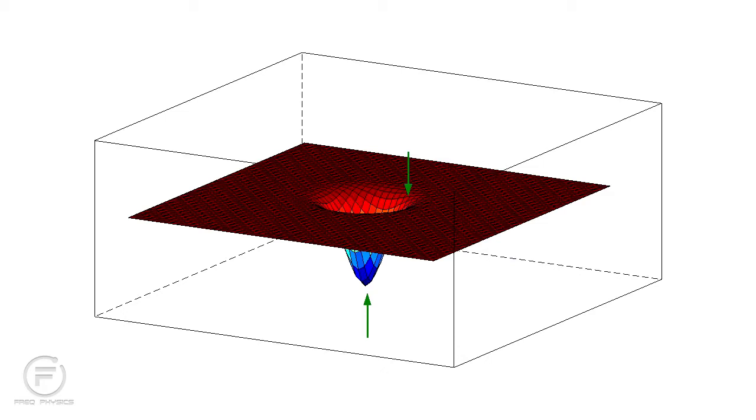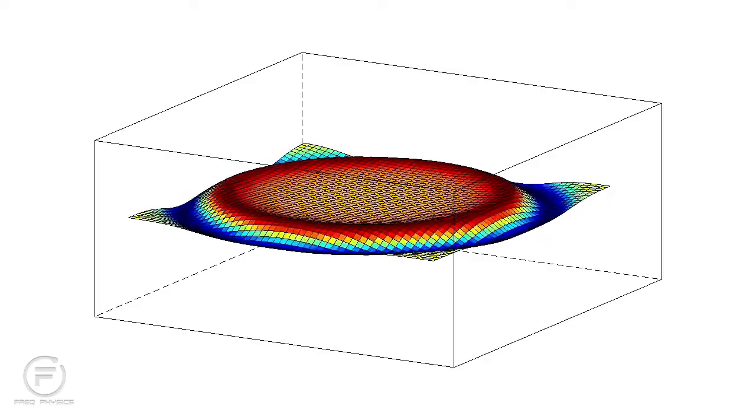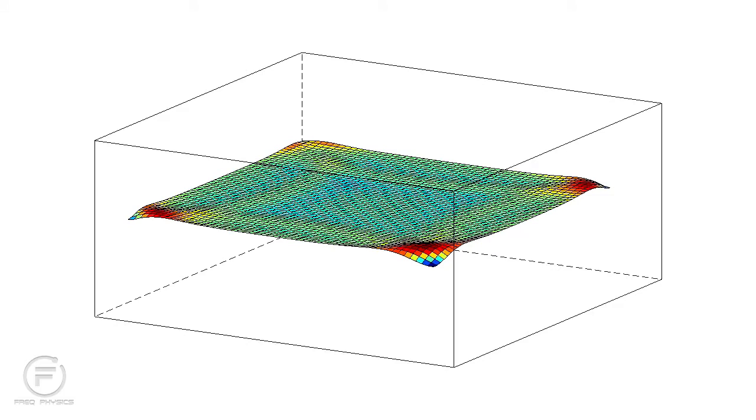As those points move in an attempt to re-establish equilibrium, they will disturb the equilibrium of yet other points, which in turn will move in response. The result is a wave which propagates away from the initial disturbance out to infinity, assuming our membrane is of infinite extent.